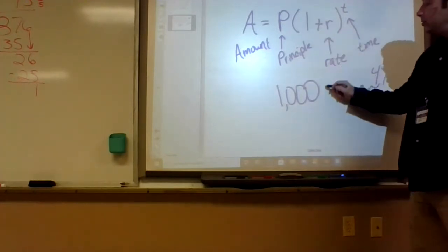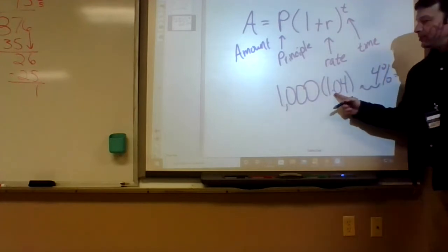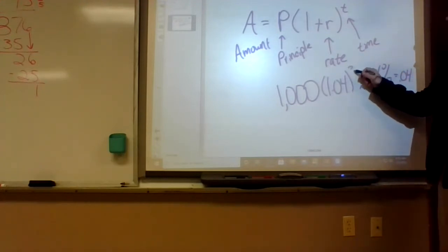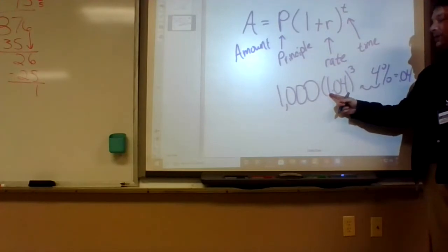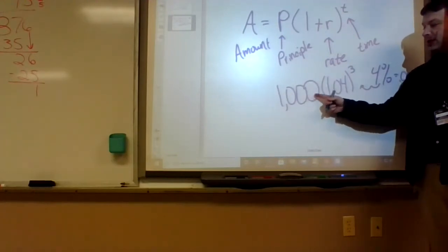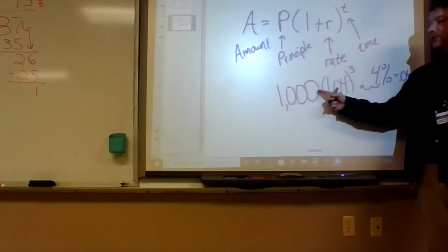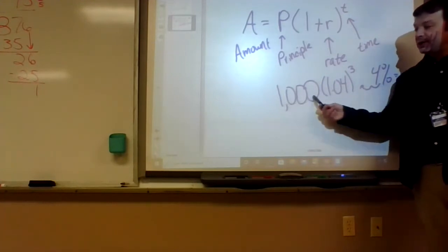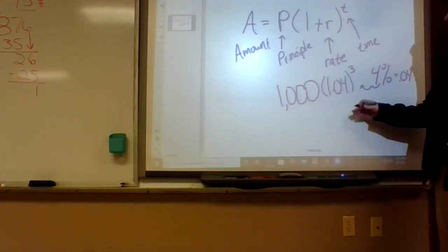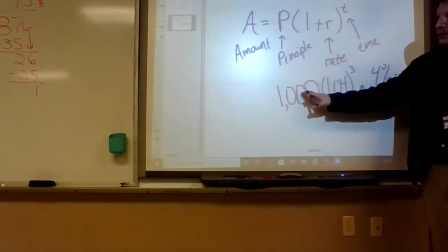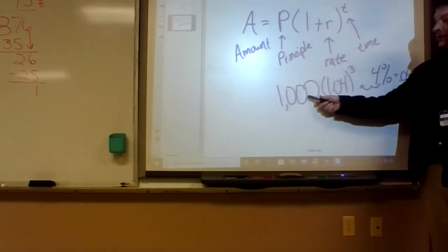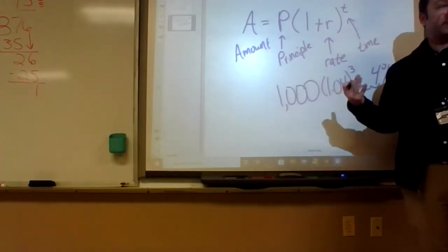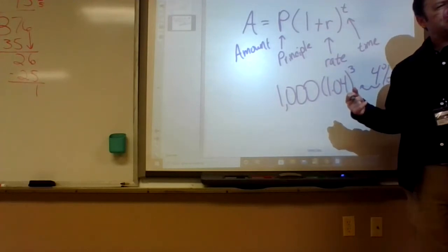So this would be like 1.04. What happens when you multiply by a number bigger than 1? It gets bigger. If you did that for 3 years, that's like multiplying by 1.04 each time. After the first year: 1000 times 0.04 is 40, so you have $1,040. The second year you get a little bit more than 40 because you're getting interest on your interest.